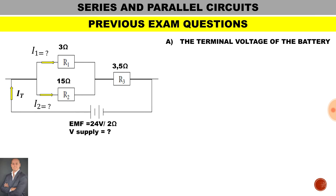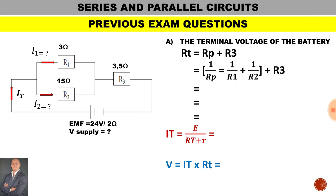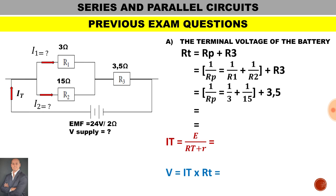In part A, to calculate the terminal voltage of the battery, we first need the total current and total resistance. The total resistance is the resistance of the parallel branch plus the value of the series resistor. Using 1 over RP equals 1 over R1 plus 1 over R2: 1 over 3 plus 1 over 15 gives a parallel branch resistance of 2.5 ohms. Adding the series resistor of 3.5 ohms gives a total external resistance of 6 ohms.